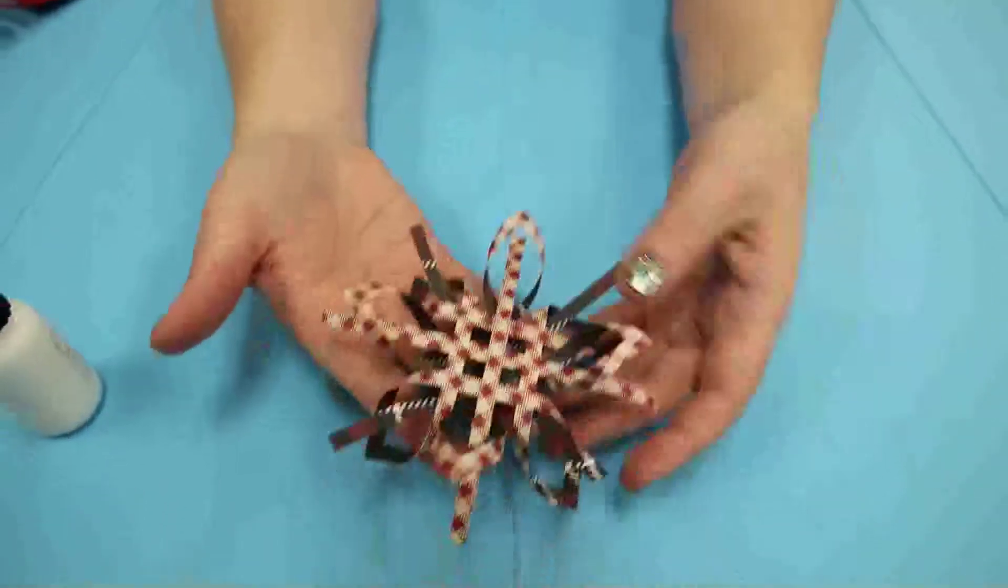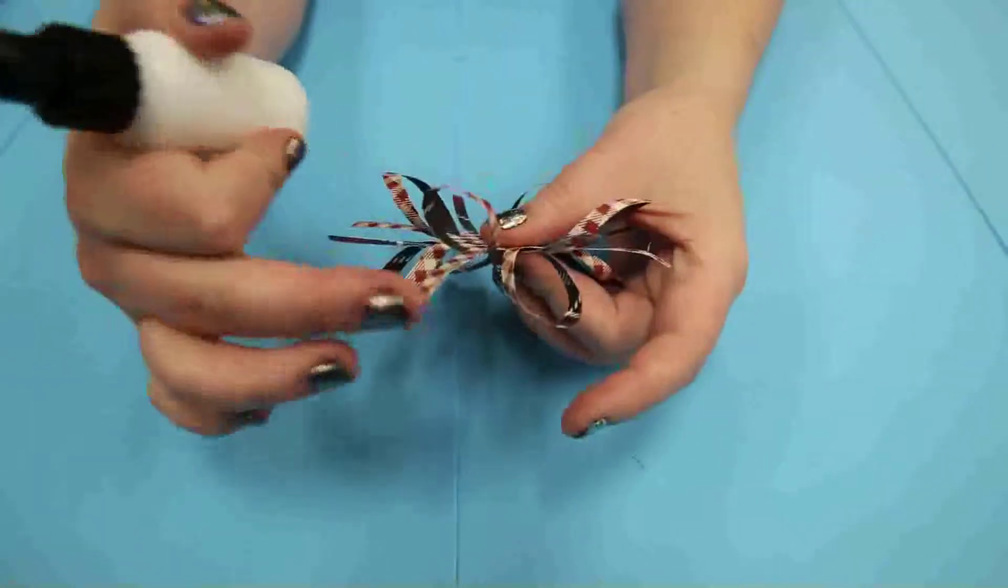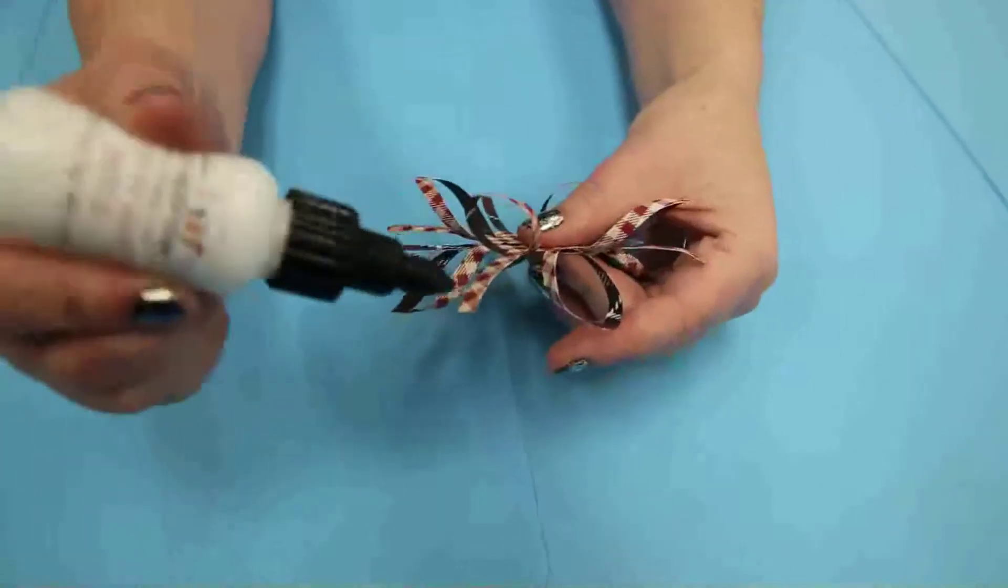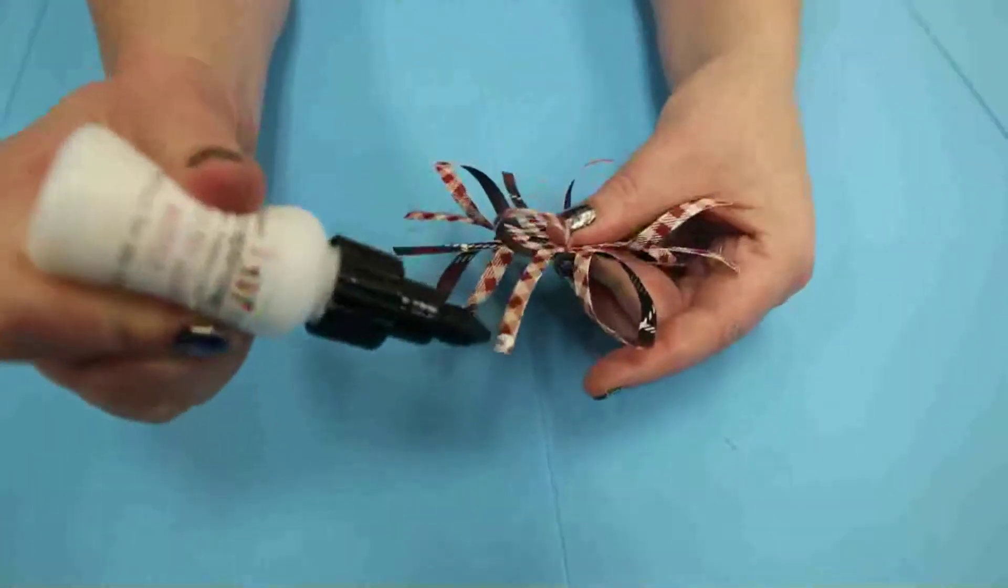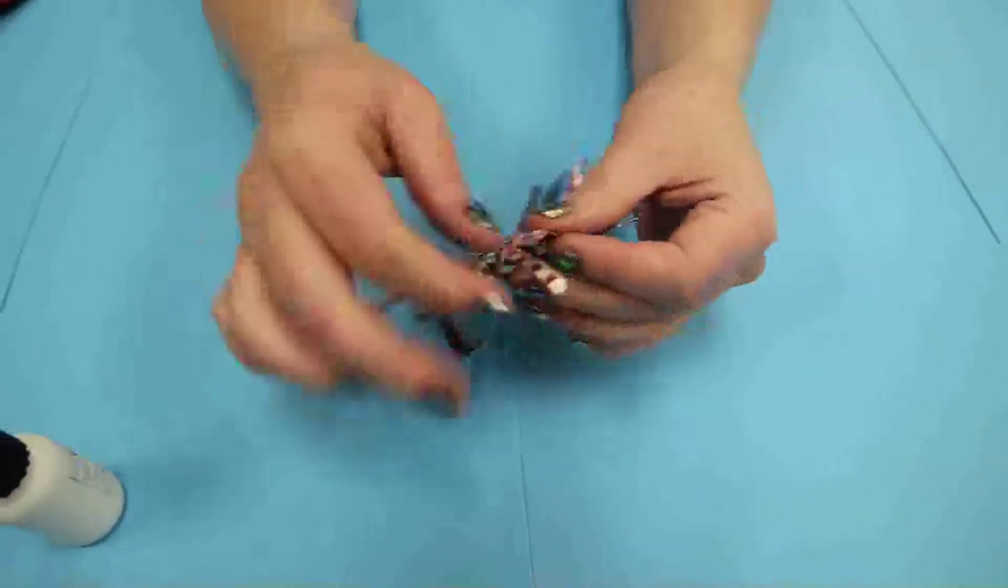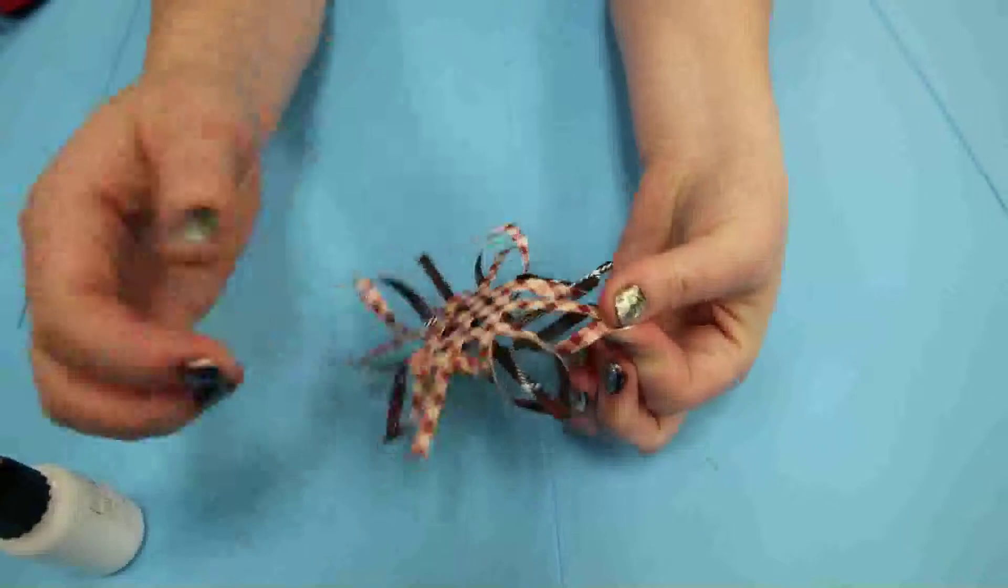This just gets it all lined up for the next step. So it looks kind of like that. Now what you're going to do is on these straight pieces, the side that is facing the loop is the side that's going to have glue. So you're going to put the glue right here.